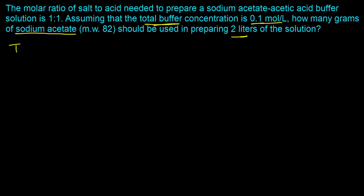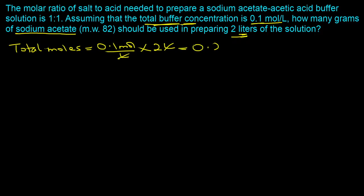We start by determining the total moles: 0.1 mole per liter times 2 liters gives 0.2 moles. Now we need to determine the moles of sodium acetate out of this total 0.2 moles. To do that, we use the molar ratio. The ratio is 1 to 1, meaning one part acid and one part salt, so the total parts is two. The mole fraction of the acetate is 1/2.